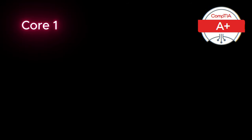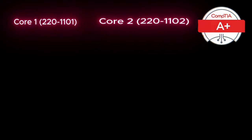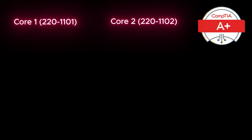The CompTIA A Plus certification consists of two exams: Core 1, which is also known as 220-1101, and Core 2, which is 220-1102. Each exam covers different domains, including hardware, networking, mobile devices, operating systems, and more.